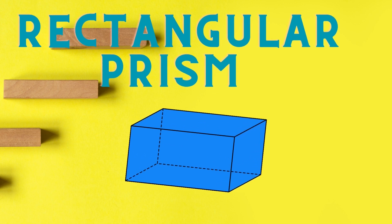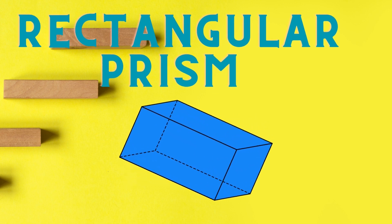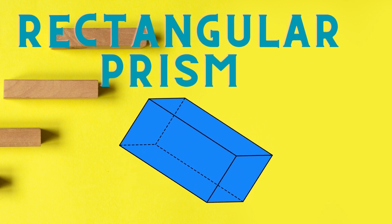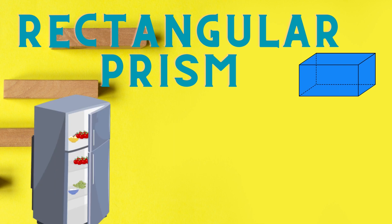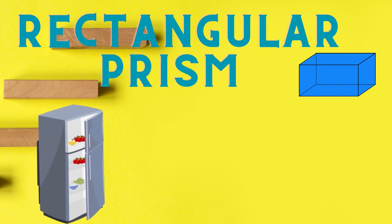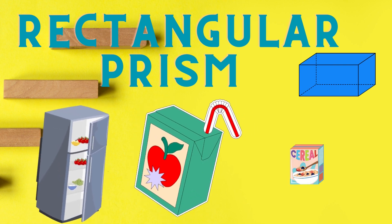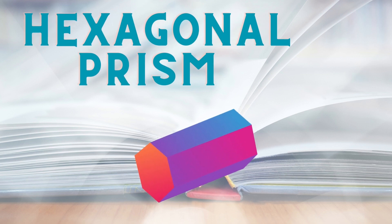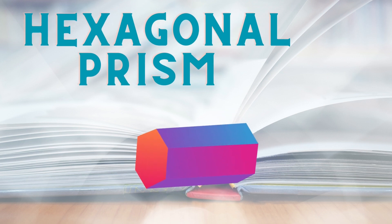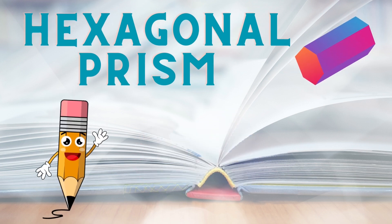Some common objects in the shape of a rectangular prism are a refrigerator, a juice box, and a cereal box. Some common items that look like a hexagonal prism are a pencil.